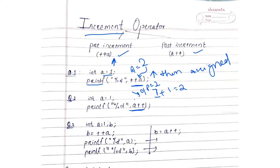Here a++ is post-increment, meaning first it will be assigned. Since a is equal to 1, 1 will be assigned here, so the output of this is 1. Now the value of a becomes 2, but the output is 1.